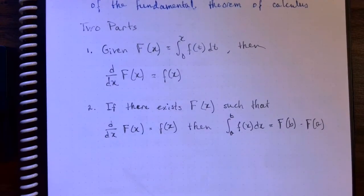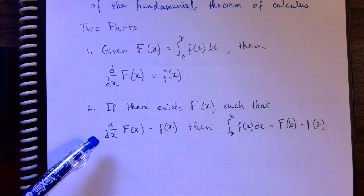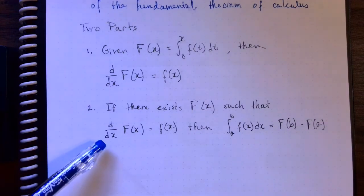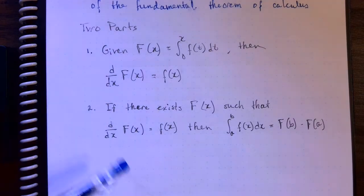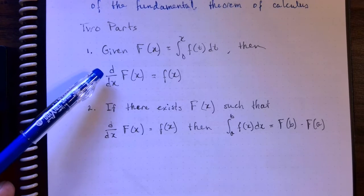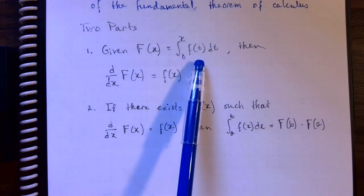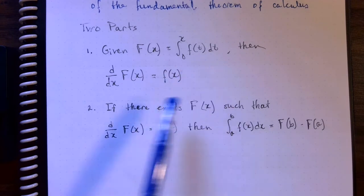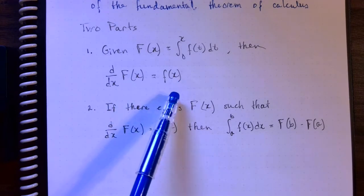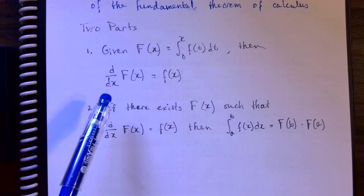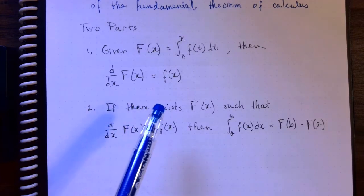Most of the time when we use the fundamental theorem of calculus, we use this part right here, which, depending on your hypotheses, could actually be a corollary to this part. This first part says that if we define a function to be a definite integral of another function, then the derivative of the integral is the integrand. In other words, differentiation and integration are inverse processes of each other.